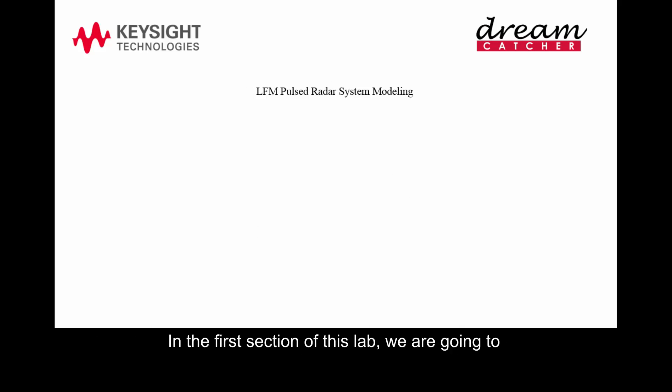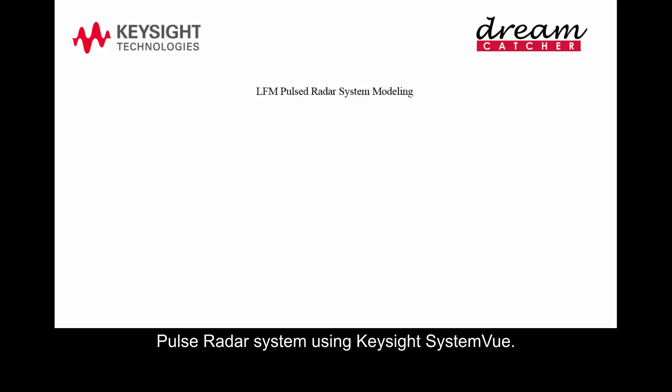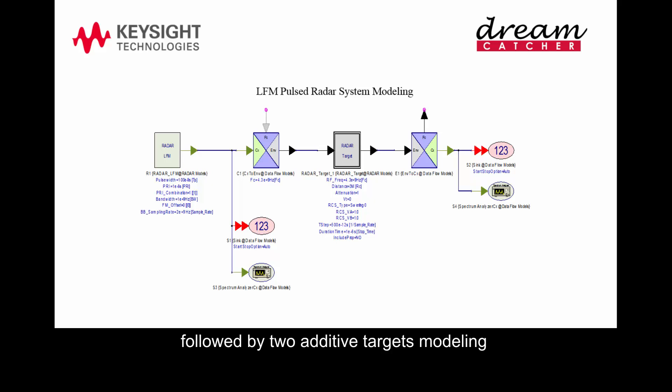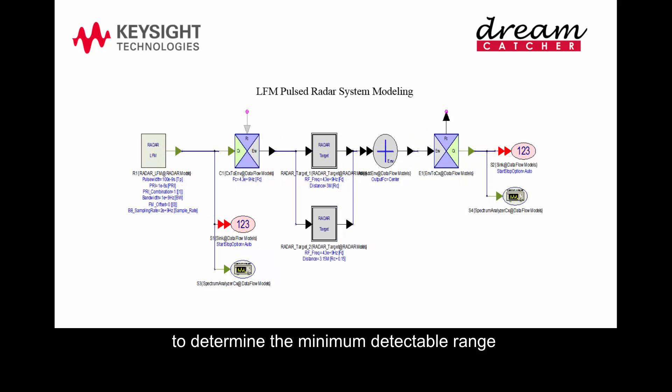In the first section of this lab, we are going to model a linear frequency modulated pulse radar system using Keysight SystemView. We will first create a one-dimensional SAR signal model with a single point target return, then followed by two additive targets modeling to determine the minimum detectable range between two targets.